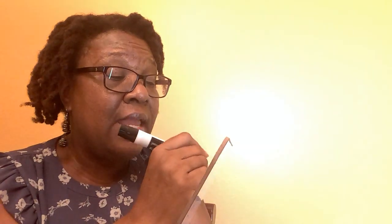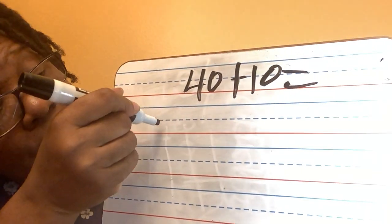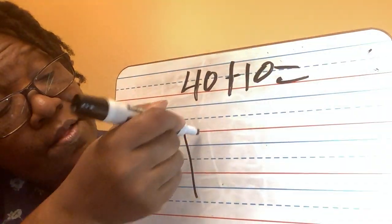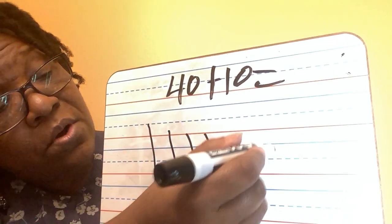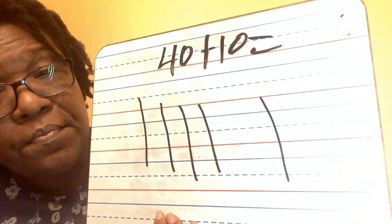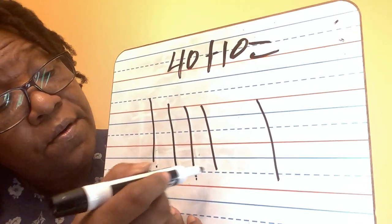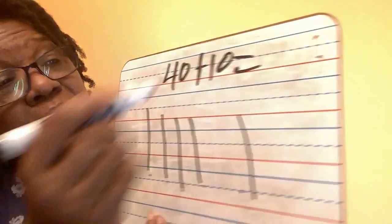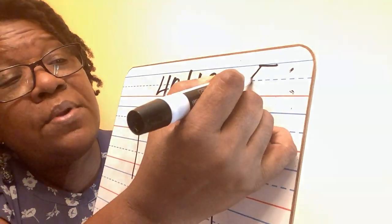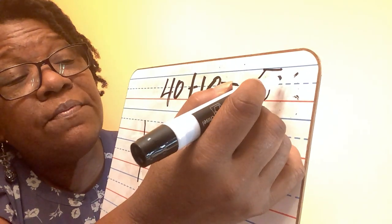Let's do another one: 40 plus 10. Let's do it together — 10, 20, 30, 40, and put 10 more. Let's count it: 10, 20, 30, 40, 50. The answer: 40 plus 10 is 50.